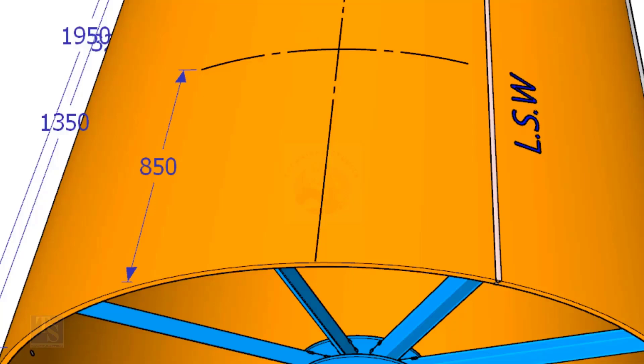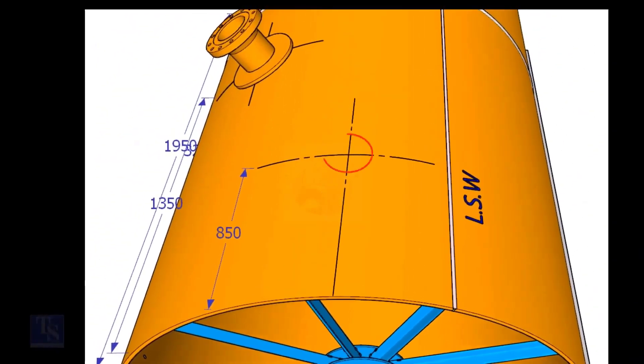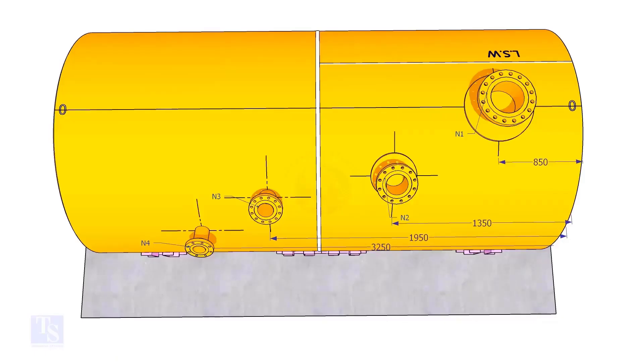Now, mark 850 millimeters exactly on this line from the end of the shell as shown. This is the center of nozzle N1. Extend the N1 center line up to the other end of the shell and mark it as zero degrees.